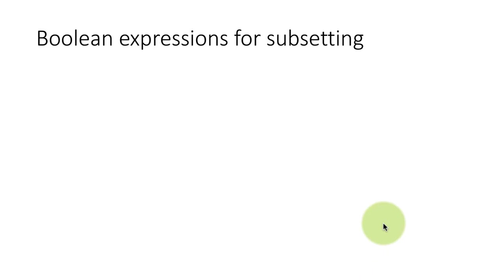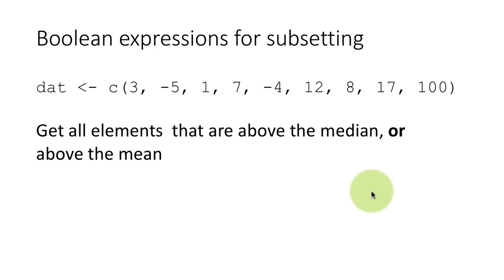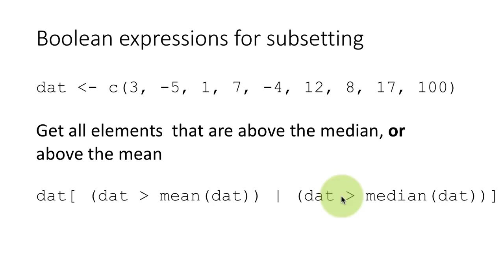There is another Boolean operator called OR. Here we say get all elements that are above the median OR below the mean. With AND, both conditions must be true; with OR, it is sufficient if either one or both conditions are true. The OR operator is the vertical bar (|), found by pressing Shift+Backslash. It is used as the logical OR operator not just in R but in many programming languages. That completes our discussion of how we use Boolean vectors to subset other vectors.